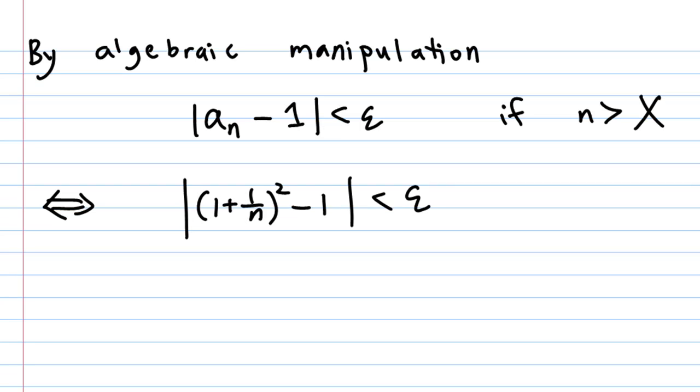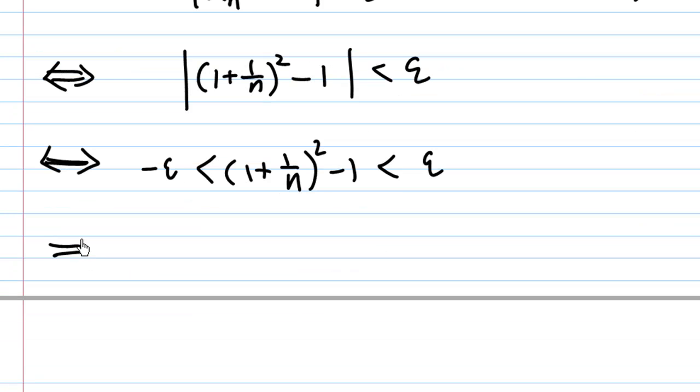Then how do we find X by algebraic manipulation? We know |a_n - 1| < ε means |(1 + 1/n)² - 1| < ε, which means (1 + 1/n)² - 1 is between ε and -ε. Adding 1 to both sides of the inequality, we have 1-ε < (1 + 1/n)² < 1+ε.